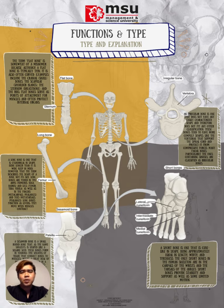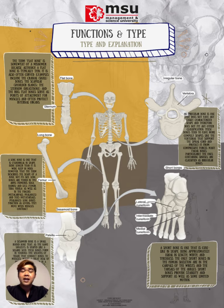The second bone type is the short bone. A short bone is cube-like in shape, being approximately equal in length, width, and thickness. The only short bones in the human skeleton are in the carpals of the wrist and the tarsals of the ankles. Short bones provide stability and support as well as some limited motion.